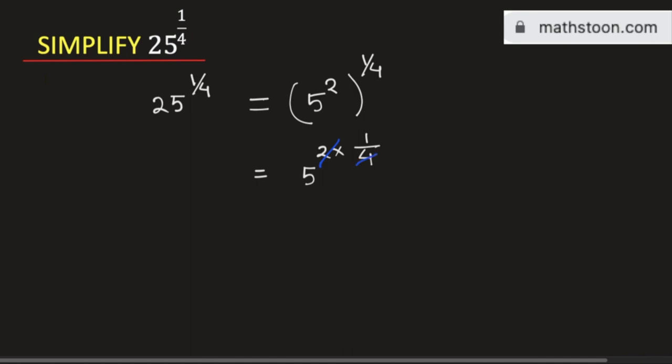Simplifying the exponents, we will have 1 over 2. So this is now 5 to the power 1 over 2, which will be equal to square root of 5.